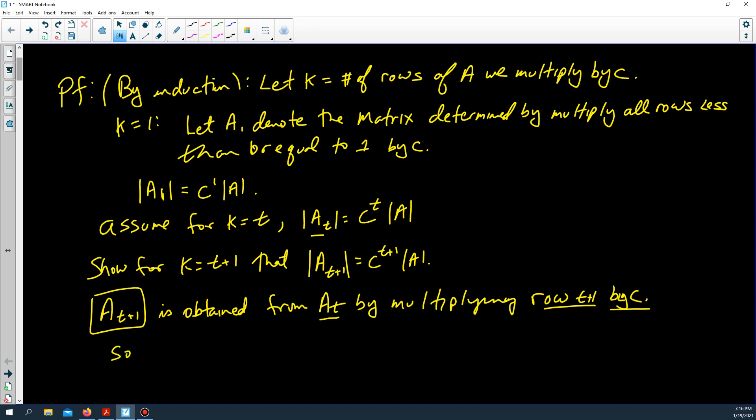By earlier theorem we know that the determinant of A_{t+1} is equal to c times the determinant of A_t. But we're assuming the determinant of A_t is equal to this. It's c times c^t times the determinant of A, which is c to the t plus one times the determinant of A, and our theorem is proven.